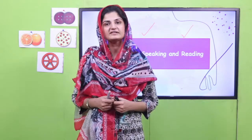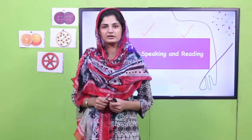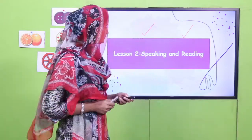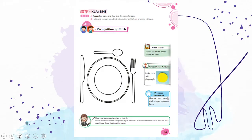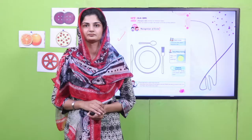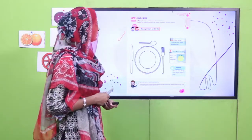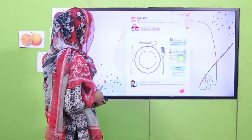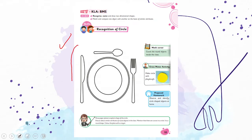Dear students, which page are we going to do today? We're going to do this page. Please pause your video here and open your page in this book. Hopefully you have opened this page. Let's take a look at what we have on this page — we have a set of plate, fork, knife, and spoon, and in the corner we have different activities.